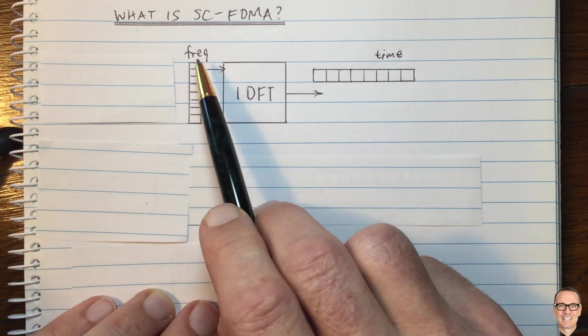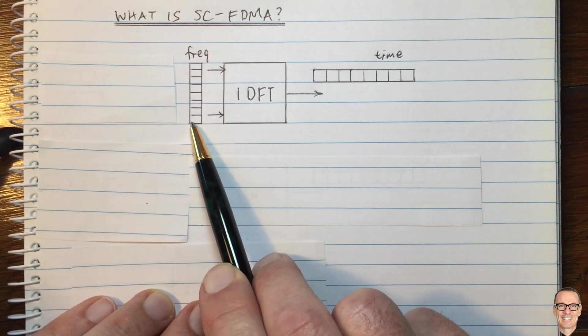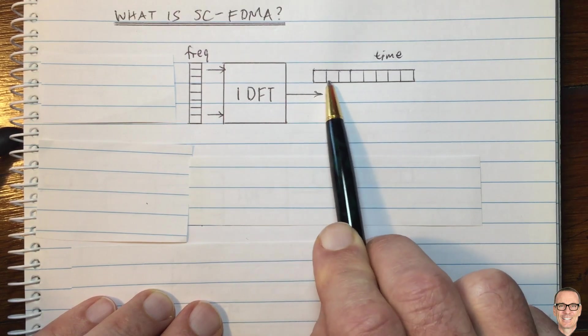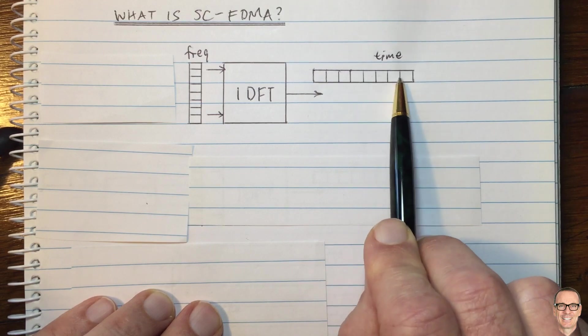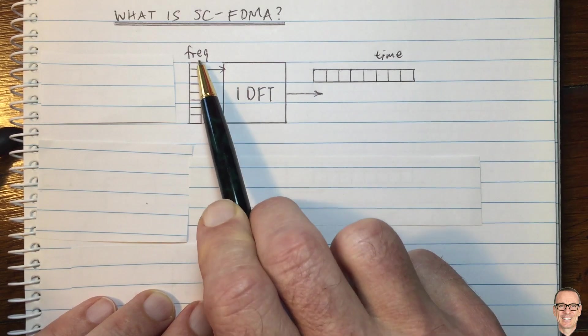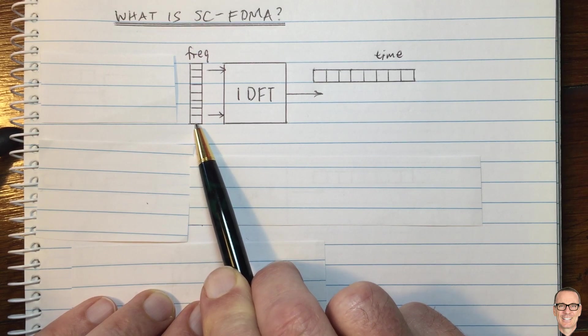In OFDM, you put your data into a vector and perform an inverse discrete Fourier transform, which gives you a vector which you clock out in the time domain. Because this is sent in time, this vector corresponds to frequency.